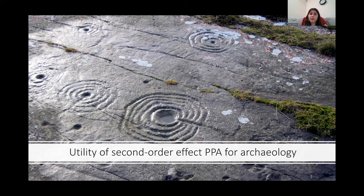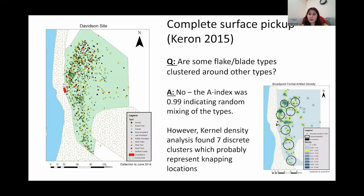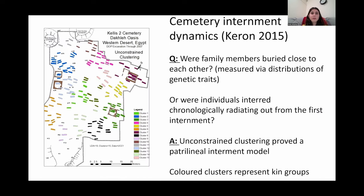Your imagination is really the limit in terms of your research question and you can test any interaction between events which influence their locations, and it definitely could be useful for a final excavation report. For example, this project by Karen showed that you can test questions like: is one artifact type clustered around another artifact type? In this case he actually found that there was no clustering, but that's still useful information.